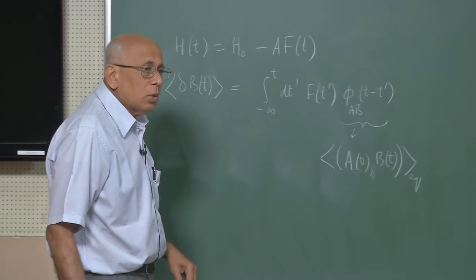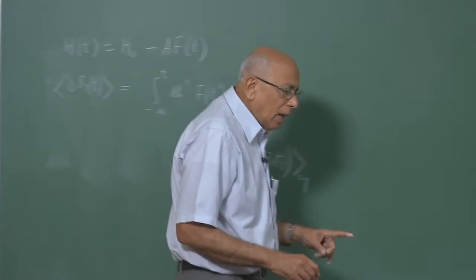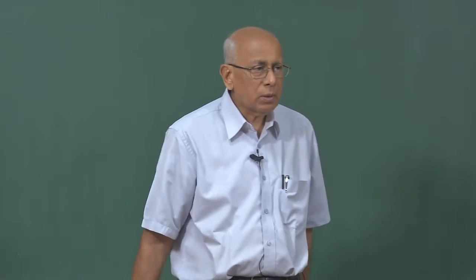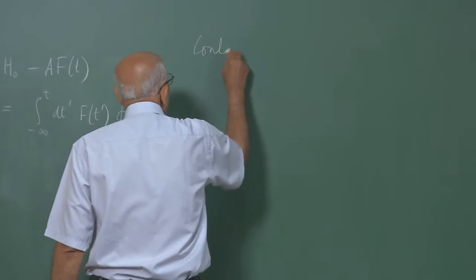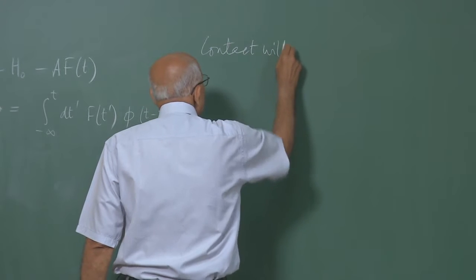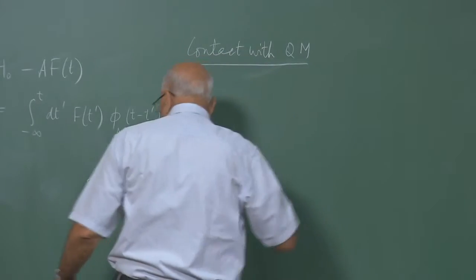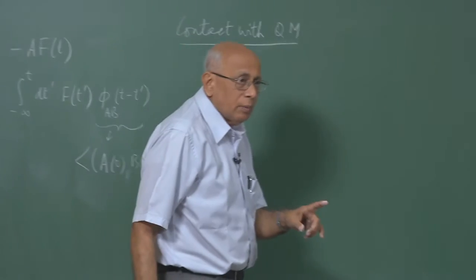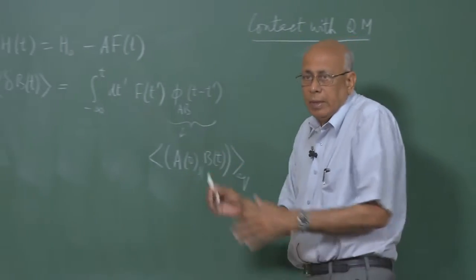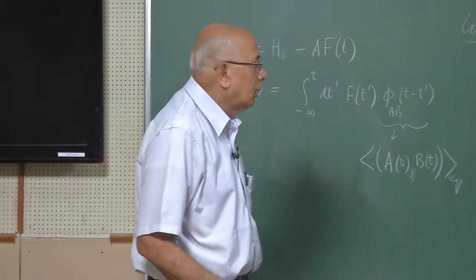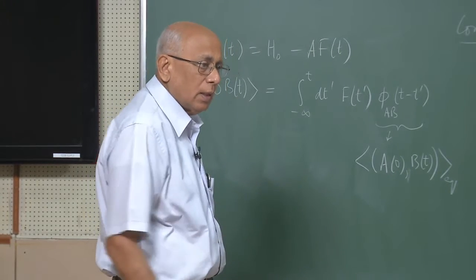What I would like to do now is establish contact with the usual way of doing quantum mechanics — make contact with the usual perturbation theory formula. We are going to do something which will explicitly show how the commutator shows up in phi, and re-derive this formula from a slightly different viewpoint. This will go through more familiar ground.